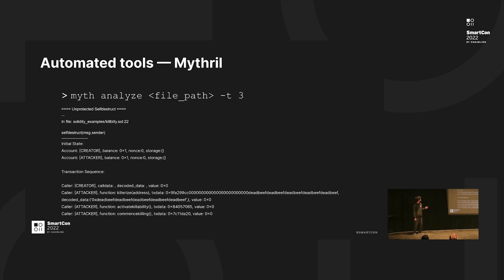This is an example of Mythril's output. The vulnerability identified is 'unprotected self-destruct,' and then we have the file name and the location of the bug, along with a transaction sequence that can be used to reproduce this bug.